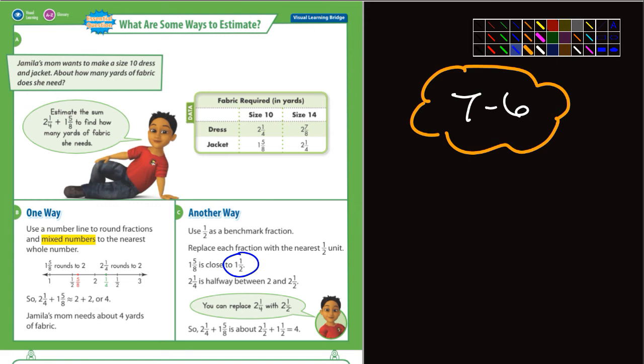But if we're estimating, you could actually replace it with 2, since 1/4 is halfway between 2 1/2 and 2. So in this one, they say 2 1/4 plus 1 5/8 is about 2 1/2 plus 1 1/2, which would be about 4.